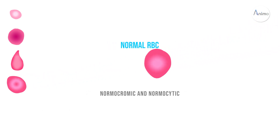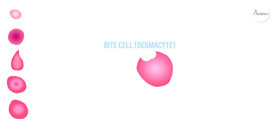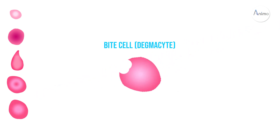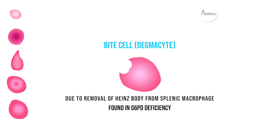The next RBC is the normal RBC — it is normochromic and normocytic. The next one is called bite cell. When there is Heinz body formation in RBC, this RBC moves towards the spleen where the spleen macrophage eats up a part of this RBC. The resulting cell has a bite on its surface, so this is called bite cell. It is found in G6PD deficiency.